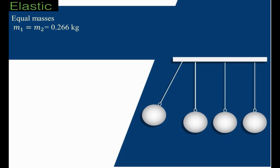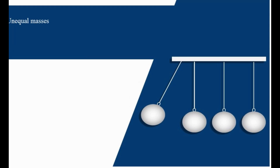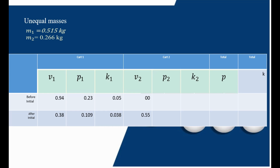For the elastic data collection table with equal masses: Mass 1 equals Mass 2 equals 0.266 kg. Find the blanks for cart 2's total momentum and total kinetic energy. For the elastic data table with unequal masses: Mass 1 equals 0.515 kg, Mass 2 equals 0.266 kg. From this table, find the momentum of cart 2, the kinetic energy of cart 2, and the totals of momentum and kinetic energy.